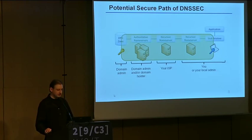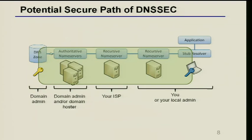The potential secure path of DNSSEC works as follows: a DNS zone is signed by a private key, and a validating stub resolver has the public key — everything in between is secured, giving an end-to-end secure path. However, this is not so common. Usually your recursive name server does the validation.